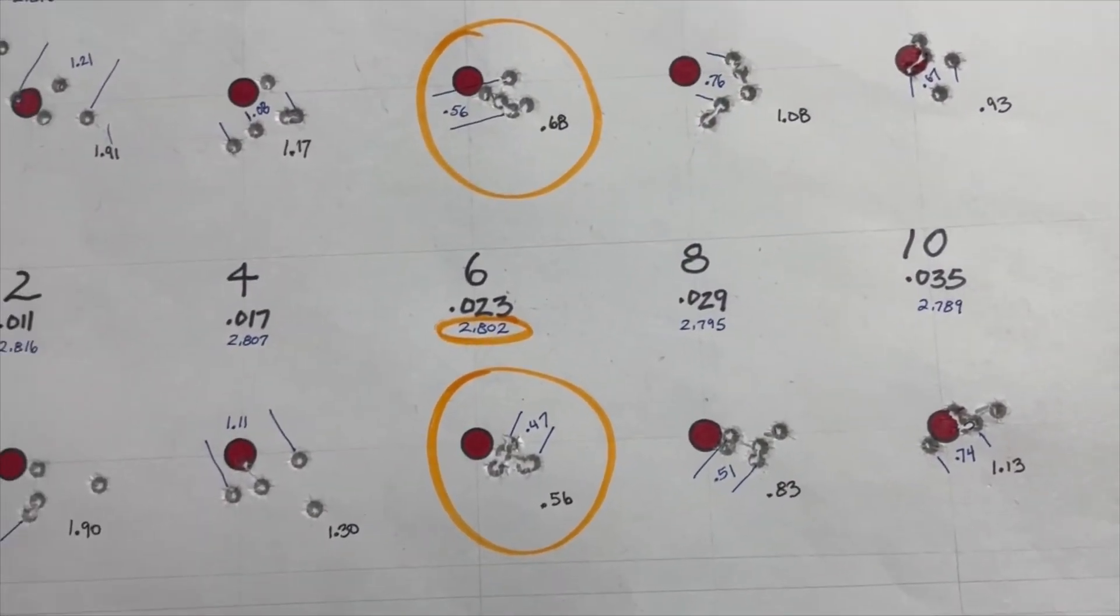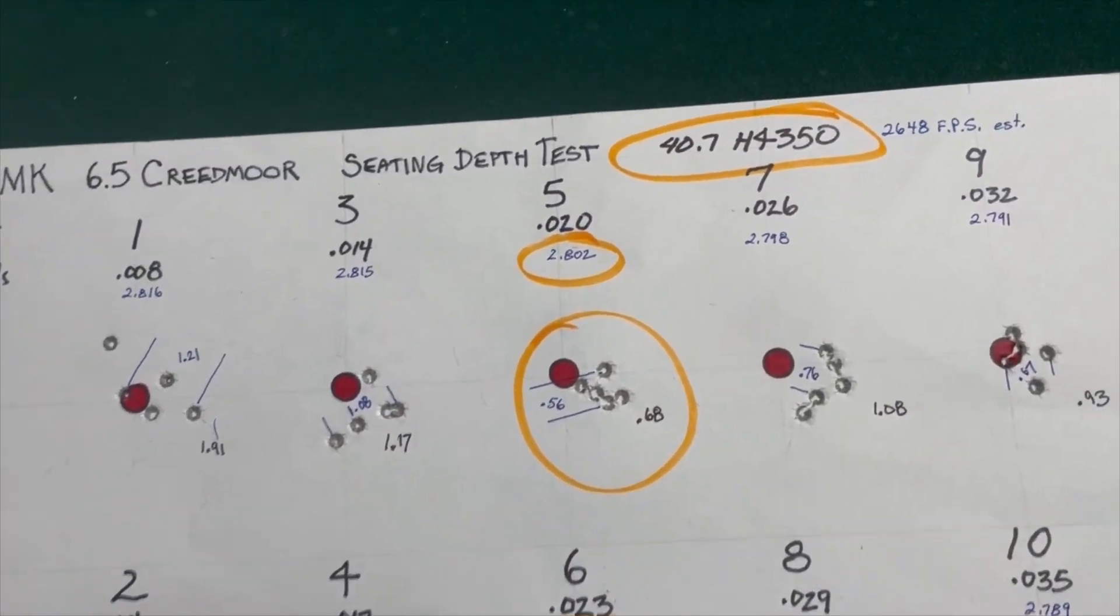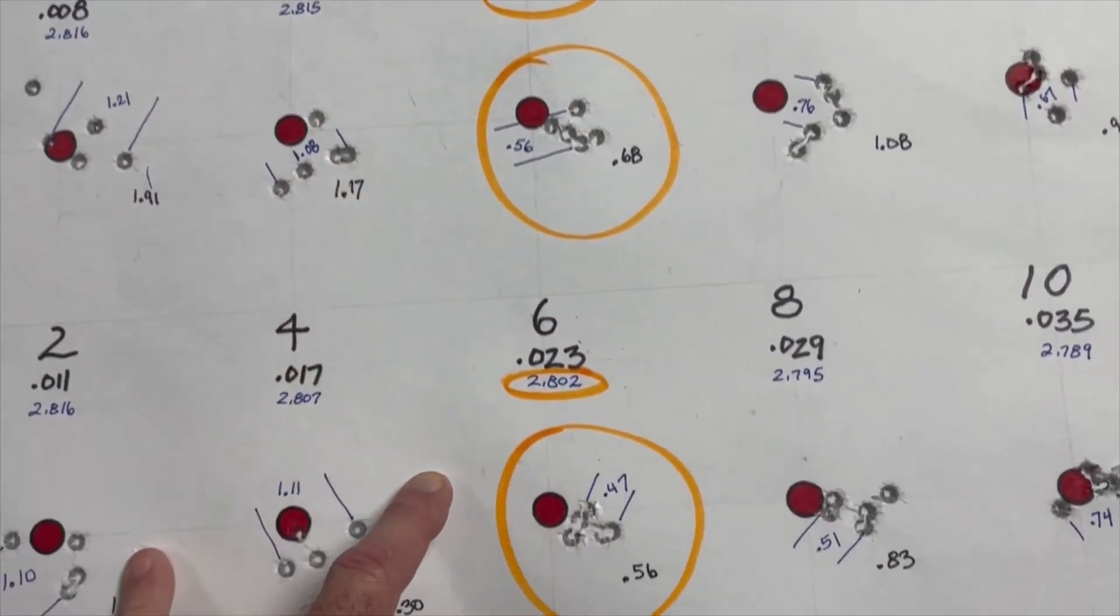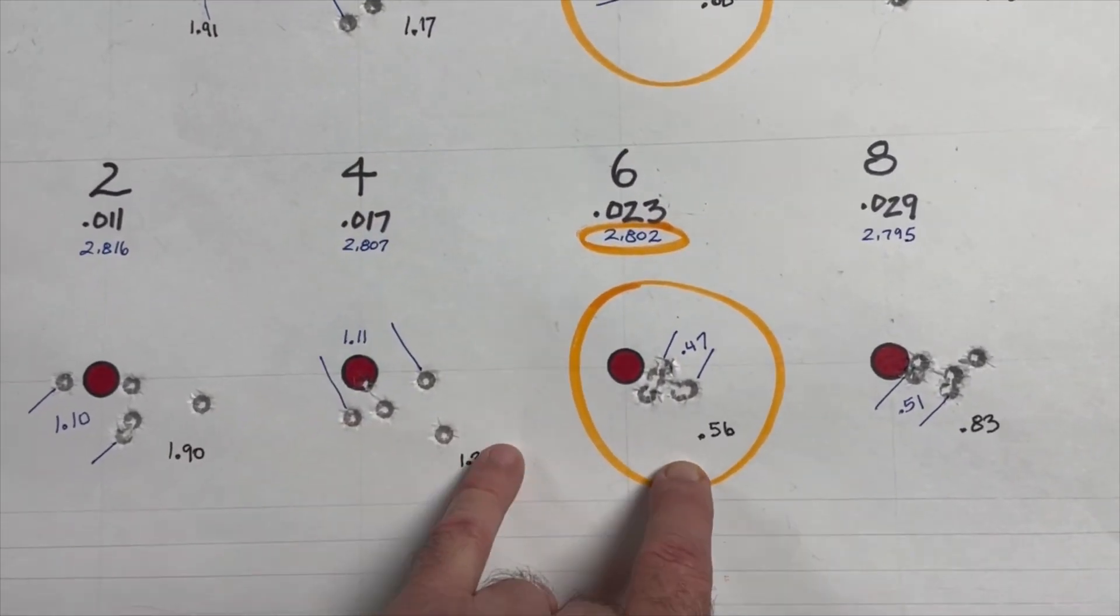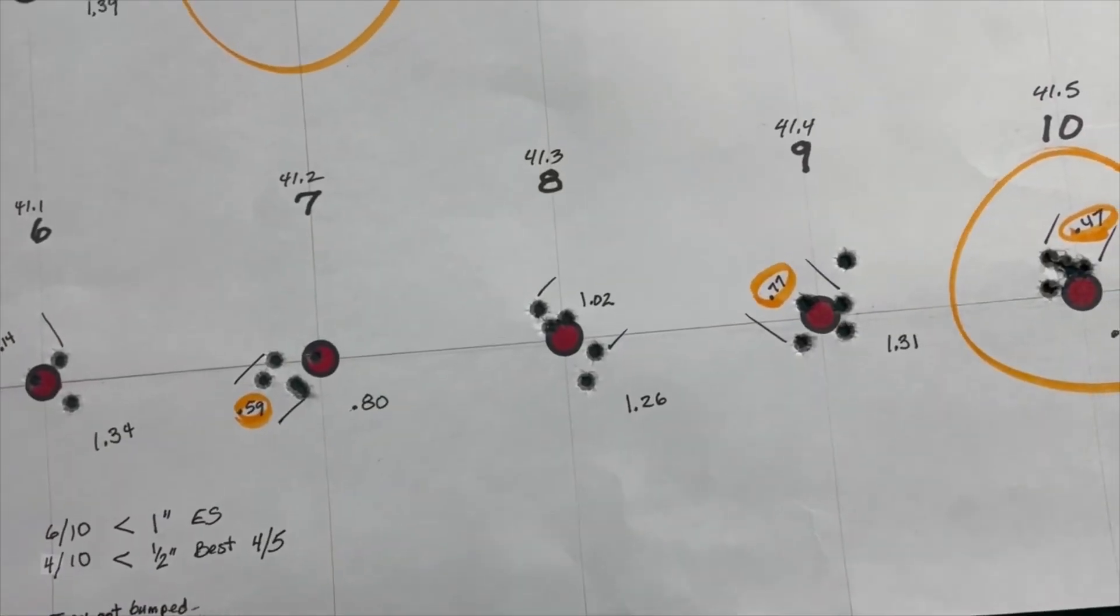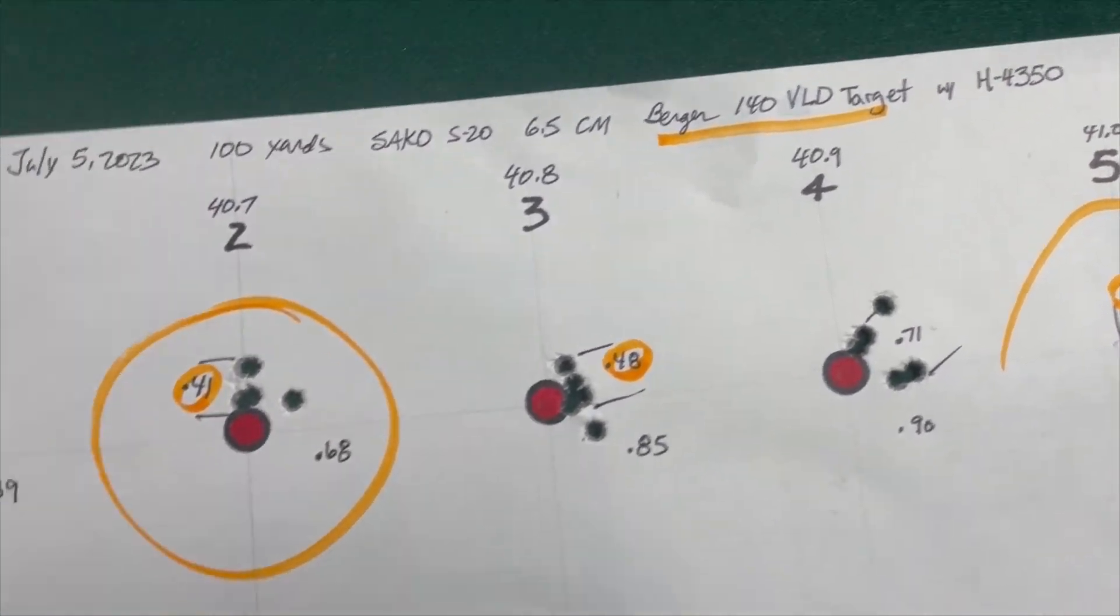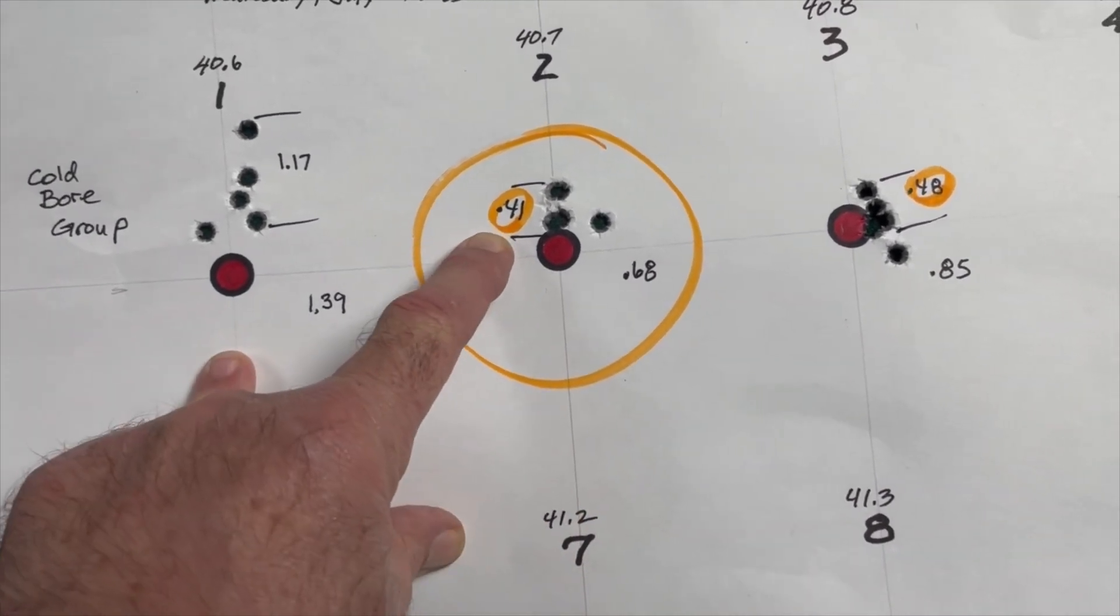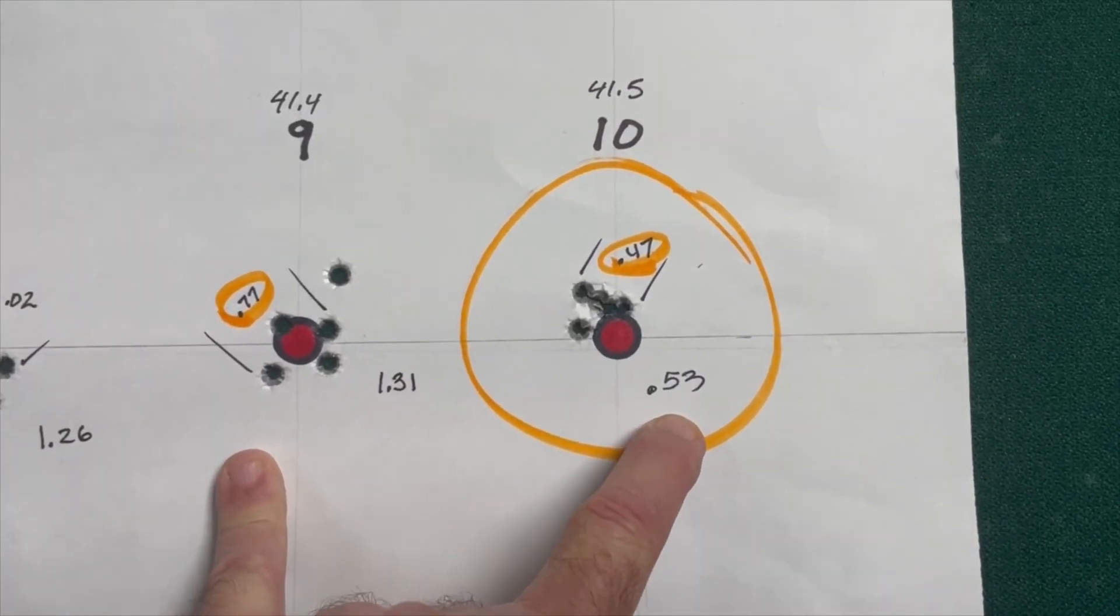I did a comparison between the 140 Sierra Match King and the 140 ELD match. At 41.1 I had .54 inches, and at 40.7 grains it didn't do so well, but this was my cold barrel shot. I had an extreme spread of 1.54, although the first shot was off and then the rest grouped at .73. My second group with the ELD match was at .89.